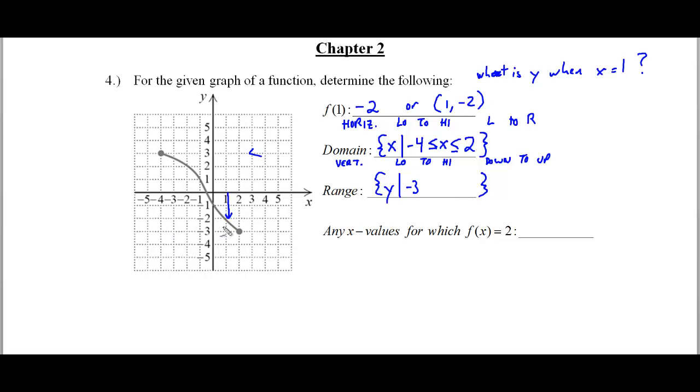And we, again, look at the lowest point on the line, not necessarily from left to right. And then we're going to go to the highest point on the graph, which is going to be 3 on our y. So y is between negative 3 and 3. And we throw those lines in there.